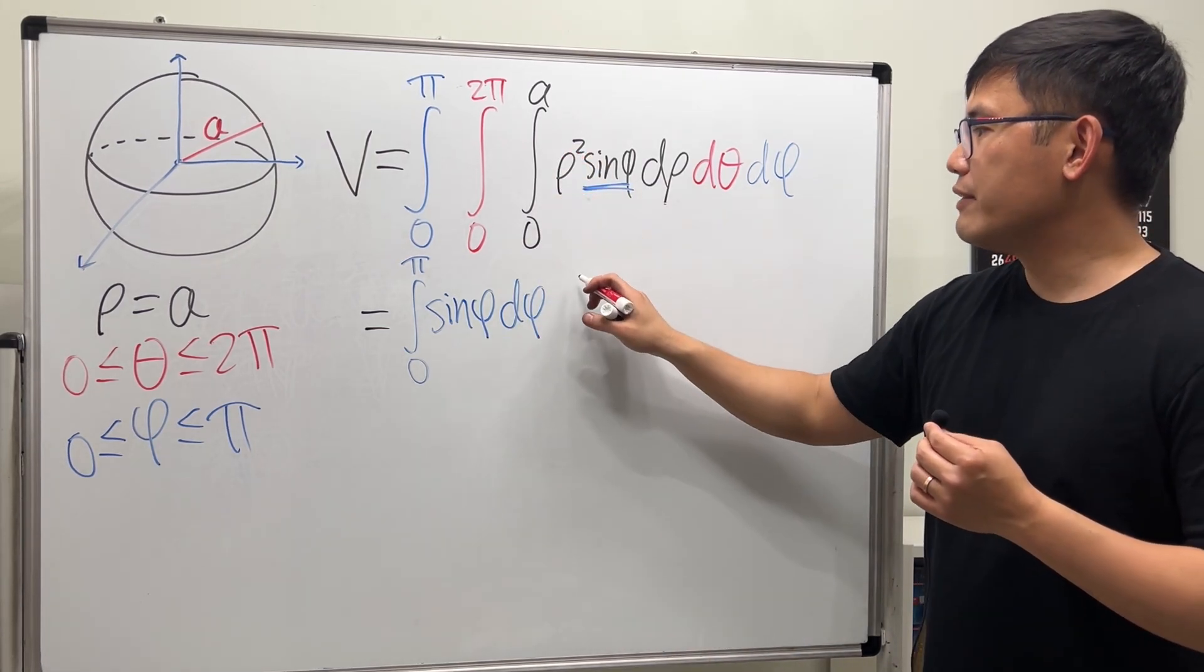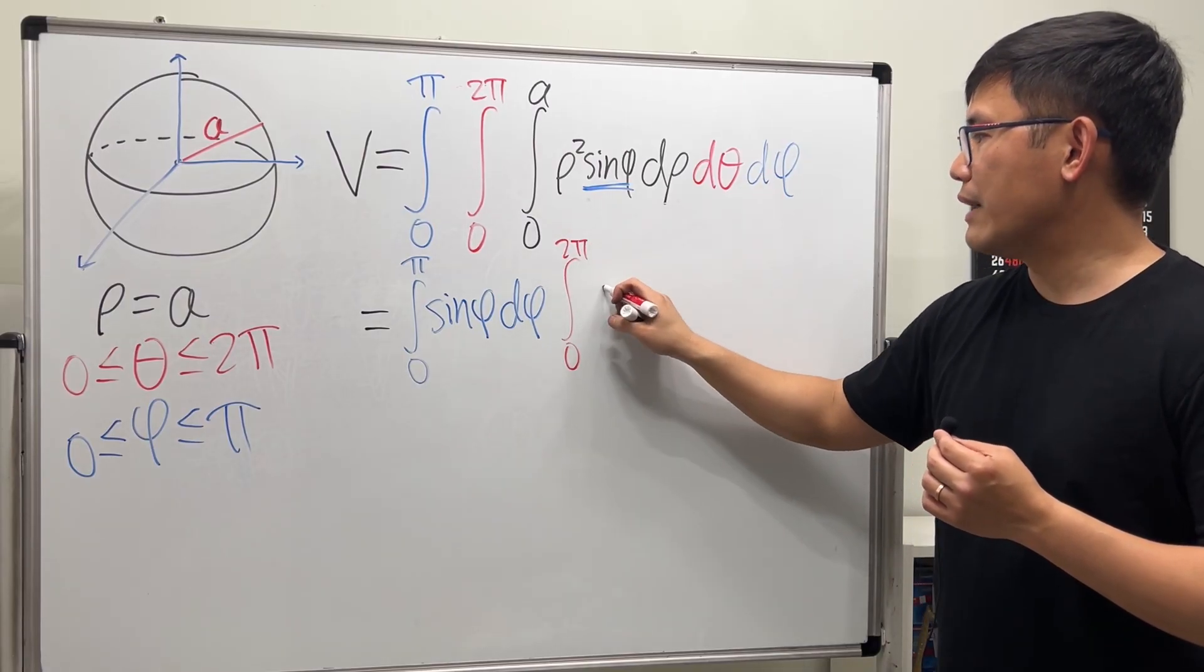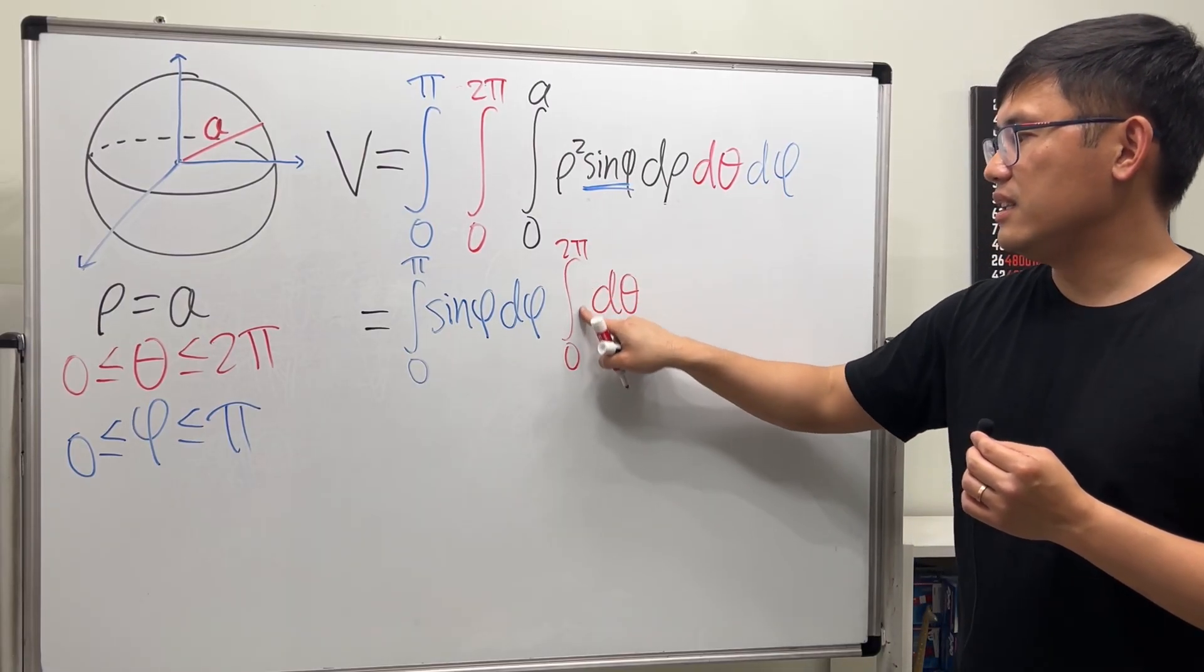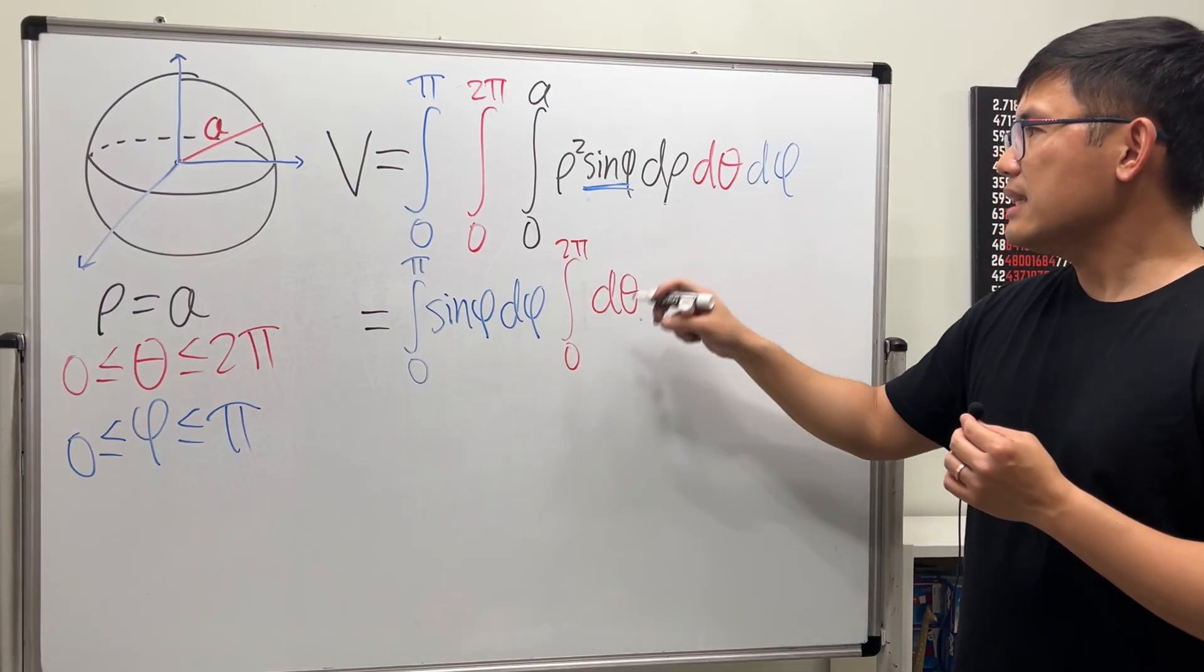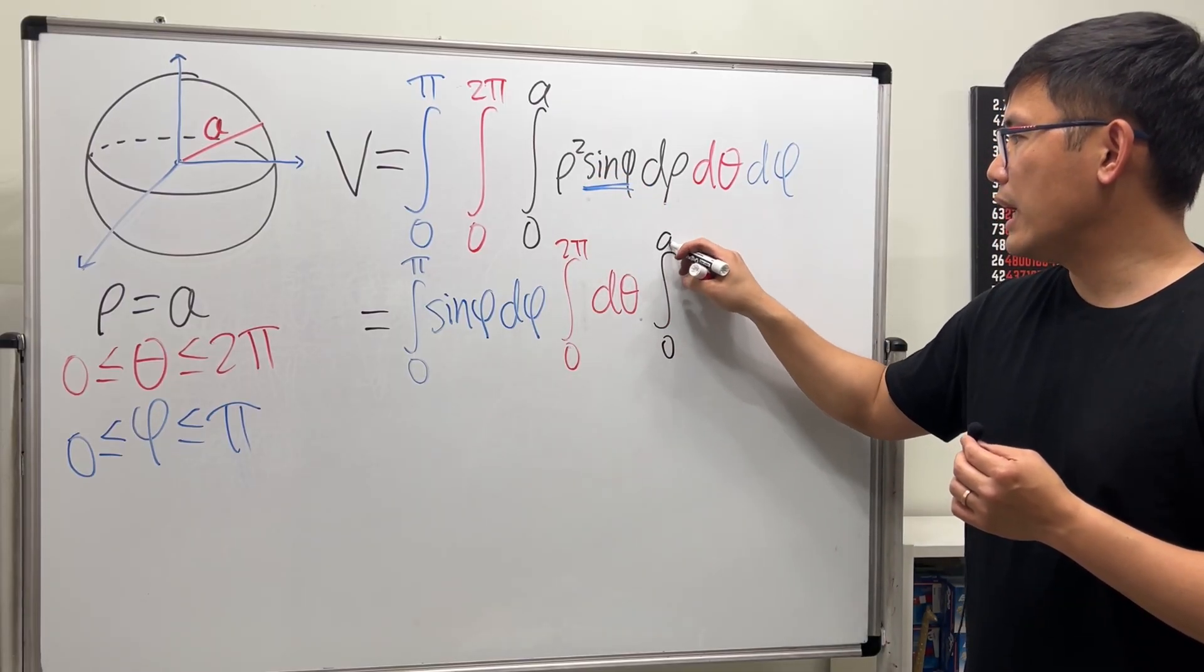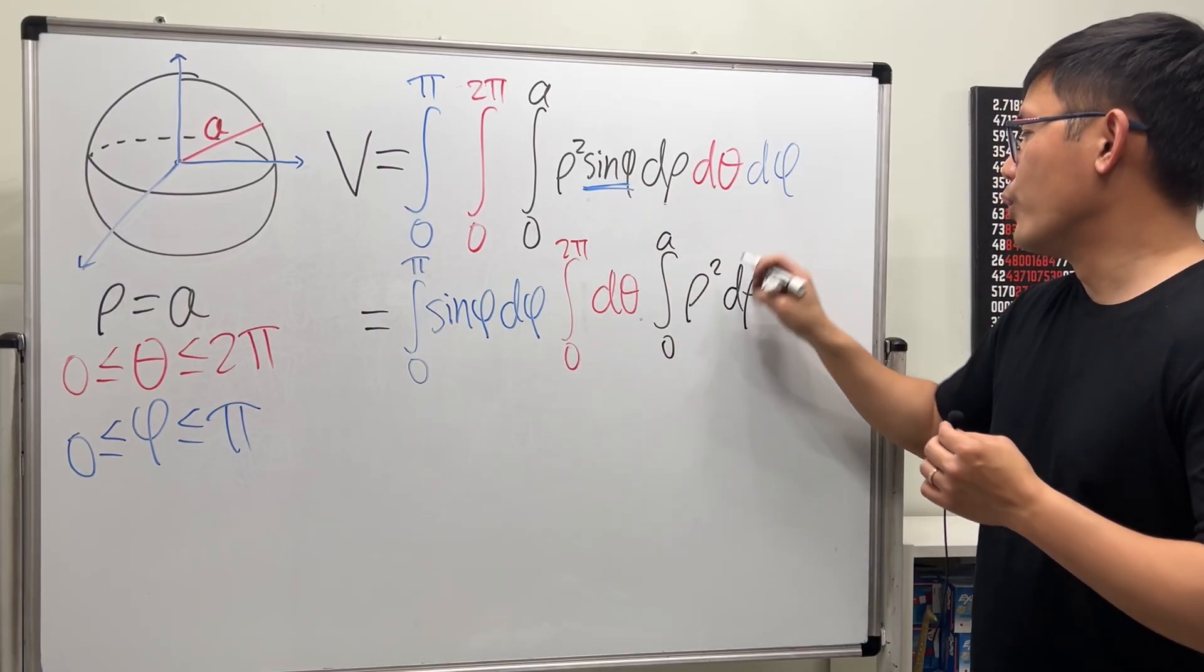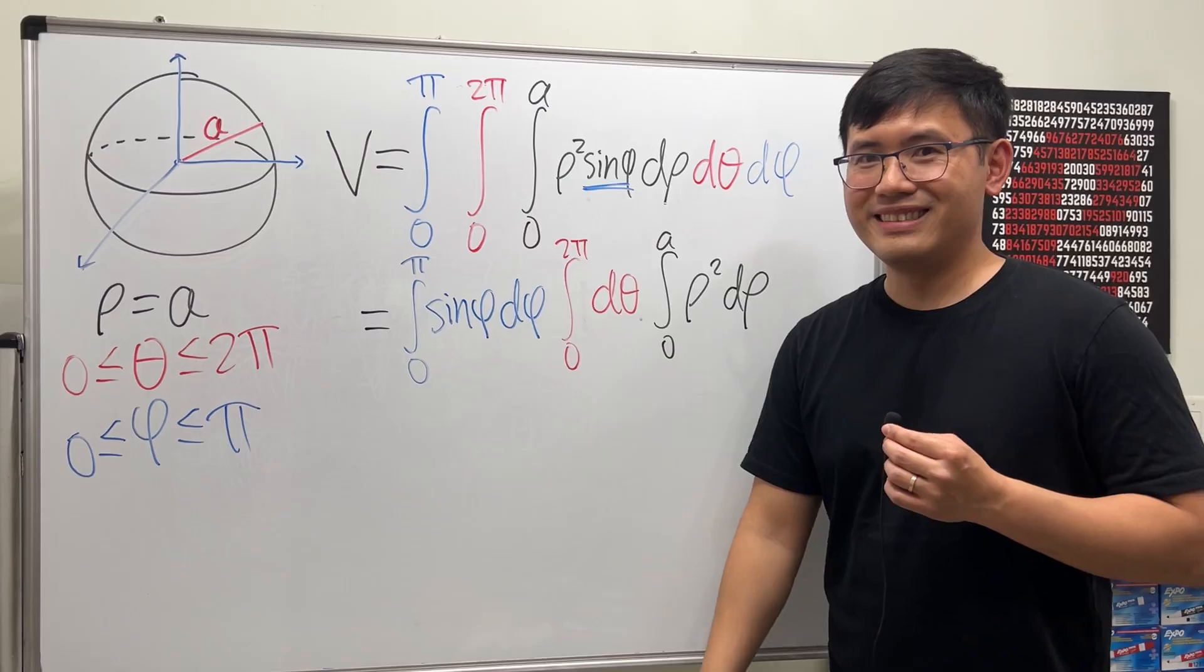Next, I will have the red one from 0 to 2π. And then we just have dθ. And technically, this is a 1. Lastly, we have the integral going from 0 to a. And then we have ρ squared in the ρ world, just like this.